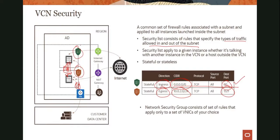You don't always have to put security controls at the subnet level. We have another feature called Network Security Groups, or NSGs, where you can do the same thing but at the virtual NIC level — applying it just to a particular instance. This gives you more granular control over security. So remember, you can apply security either at the virtual network interface layer or at the subnet layer, and there are different use cases for when you would use one over the other.